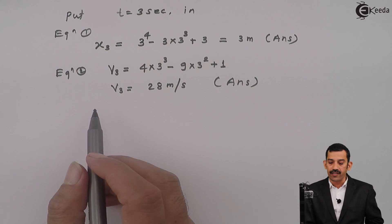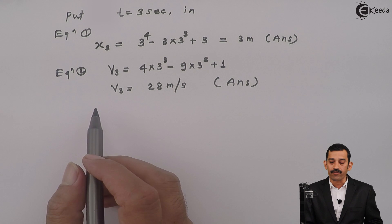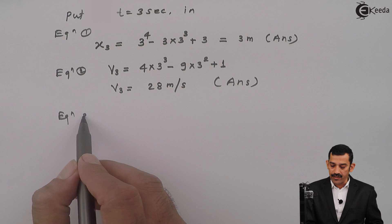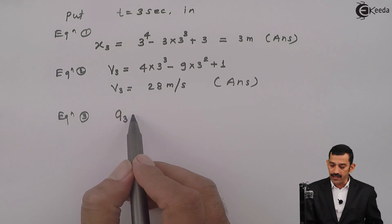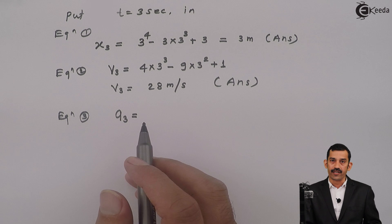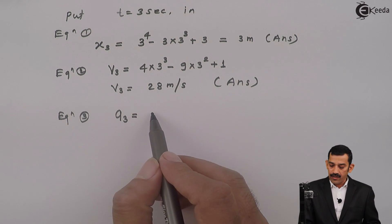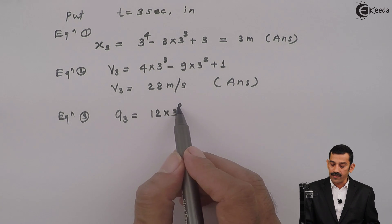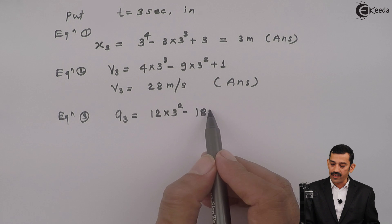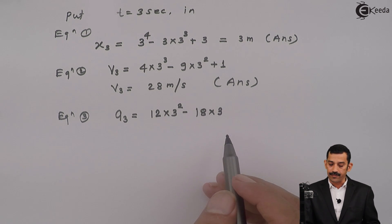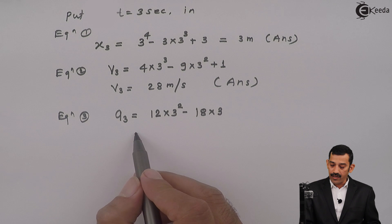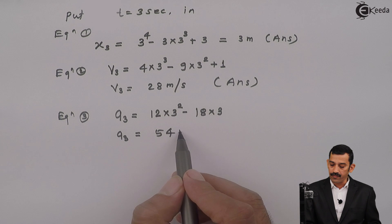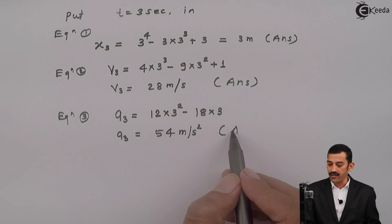Similarly, substituting t equal to 3 seconds in equation 3, which is the equation of acceleration: a at 3 seconds equals 12 into 3 squared minus 18 into 3. Calculating this, acceleration at 3 seconds comes out to be 54 meters per second squared. This is our third answer.